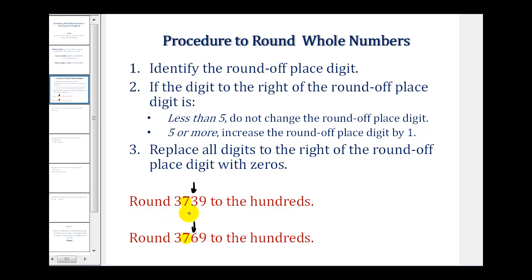So for 3739, if we round this to the hundreds, this three tells us to round down. Which means we do not change the seven and then replace the digits to the right with zero. So this would round to 3700.